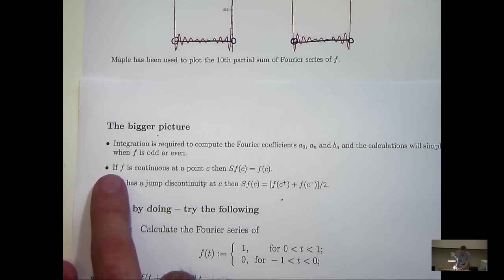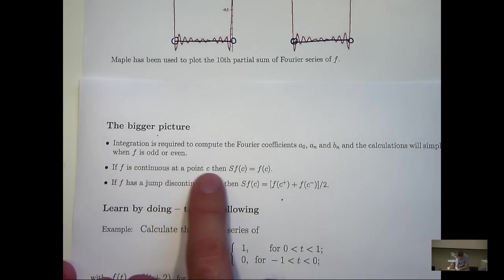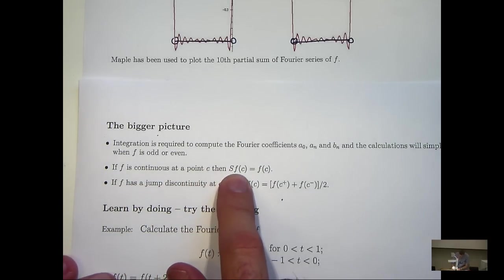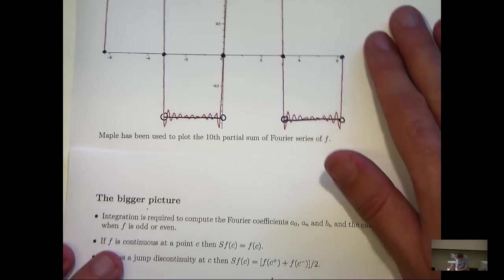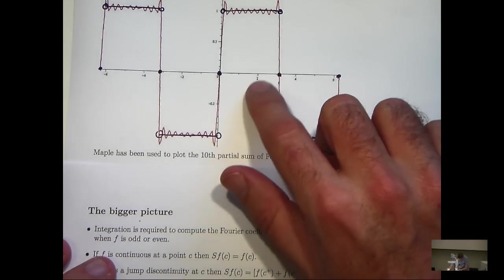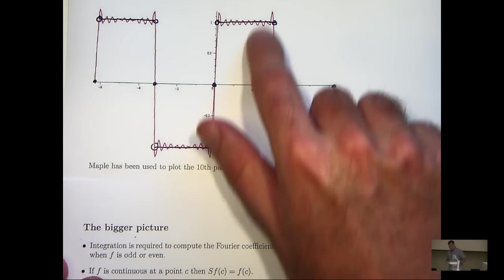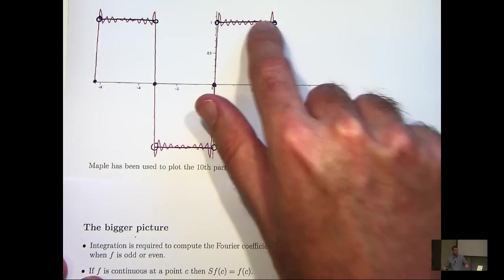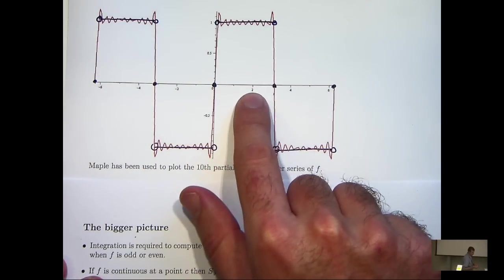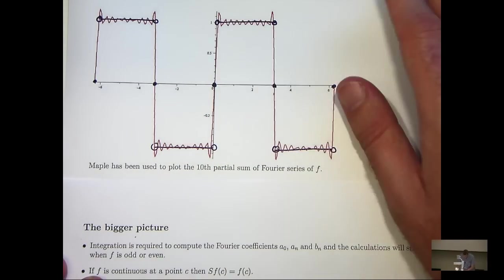Two more points that I haven't really mentioned. If f is continuous at a point c, then the Fourier series at that point converges to f at that point. So you can see, for example, if we're at the point 2, we can see the blue graph is continuous at 2. And so in the limit, the Fourier series will converge to f of 2.